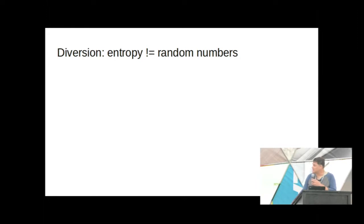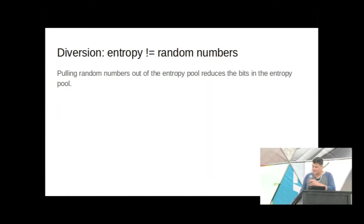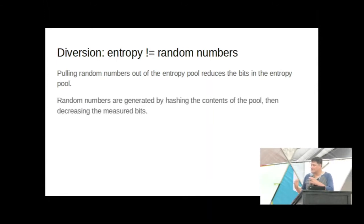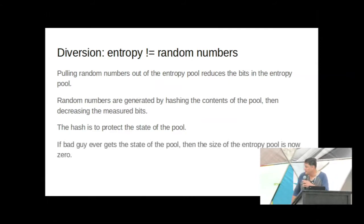Here's an important point: entropy does not equal random numbers. Pulling random numbers out of the entropy pool reduces the bits in the pool, but you should never take the contents of the pool directly, because you'd be exposing the state, and someone might work backwards through it. The hash protects the state of the entropy pool. The kernel takes care of all this for you.